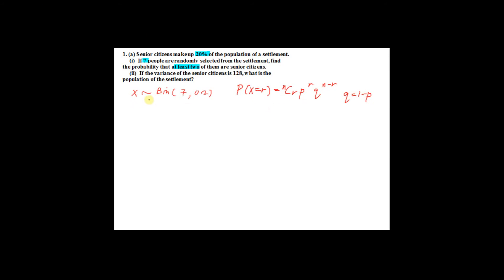For this binomial(7, 0.2), P(X = r) = 7Cr × (0.2)^r × (0.8)^(7−r), since p is 0.2 and q is 1 minus 0.2 which is 0.8.